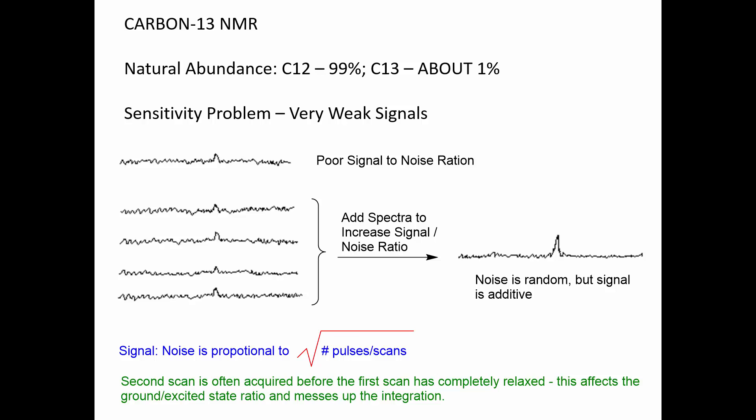An equation tells us how long we need to acquire the spectra. If we take multiple pulses or scans, the signal-to-noise ratio is proportional to the square root of the number of pulses or scans. If we take the spectrum 100 times, we can expect the signal-to-noise ratio to increase by a factor of 10.